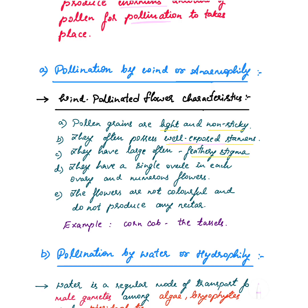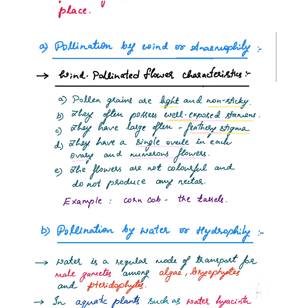Third, wind pollinated flowers have a large, often feathery stigma — just as birds have feathers to fly, the feathery stigma can easily trap airborne pollen grains. Fourth, they have a single ovule in each ovary, and numerous flowers are produced. Fifth, the flowers are not colorful, as there is no need for vibrant colors since pollination is carried out by air currents.